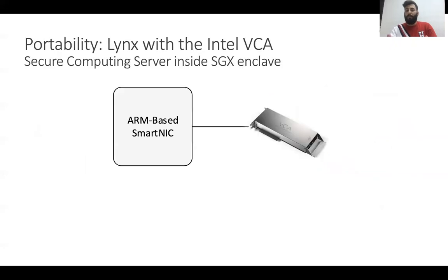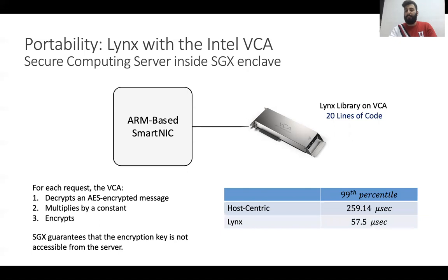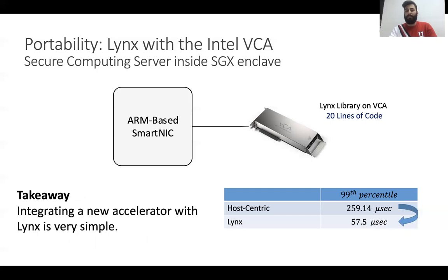In the third experiment, we show how simple it is to integrate a new accelerator with Links. We chose the Intel VCA accelerator, and to integrate the VCA with Links we only needed to add 20 lines of code to implement the lightweight library on the VCA side. We then ran a secure computing server inside an SGX Enclave where for each request it decrypts an AES encrypted message, multiplies it by a constant, encrypts the result, and sends it back to the client — with SGX guaranteeing the encryption key is not accessible from the server. From the results table, Links achieves much less latency compared to the host-centric architecture, and the takeaway is that integrating a new accelerator with Links is very simple.